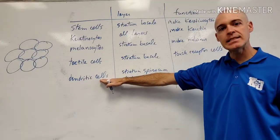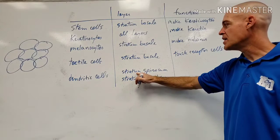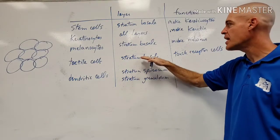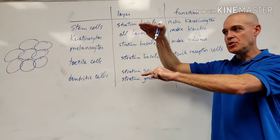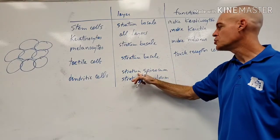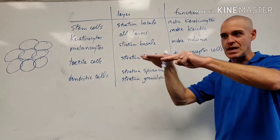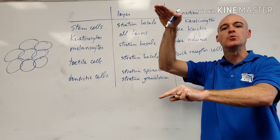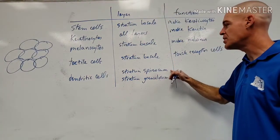Lastly, we have the dendritic cell, which is found in two different layers. These layers are up just a little bit from the stratum basale, so they're not as deep, but they're in the stratum spinosum, which would be the next layer up, and then the stratum granulosum.